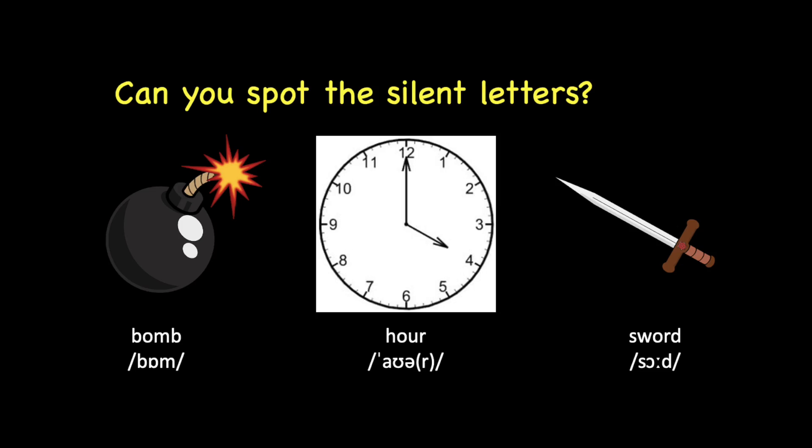All right, welcome back. For the first picture, we have 'bomb'. Yes, the silent sound is 'b' — we don't pronounce the B at the end of the word, so it's actually read as 'bomb'. For the second picture, very good — the silent sound is the 'H' sound. We don't say 'how-er', but we say 'hour'. The H sound is silent. And for the last picture, the silent sound is the 'W'. Instead of reading this as 'sw-ord', we only read this as 'sword'. Sword. Good try.